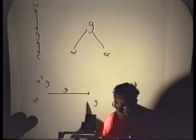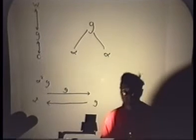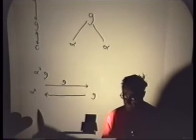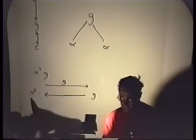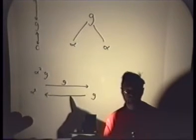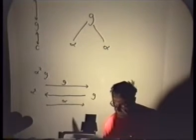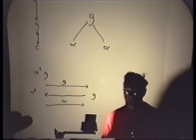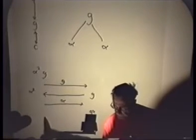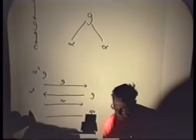Now the goat is on the right side and the two alphas are on the left. The only thing the shepherd can do is go back all by himself. On the next trip, he cannot go back empty again because that would undo the previous move. So he has to take something — he has to take an alpha. Now there is a goat and an alpha on the right, and an alpha on the left.